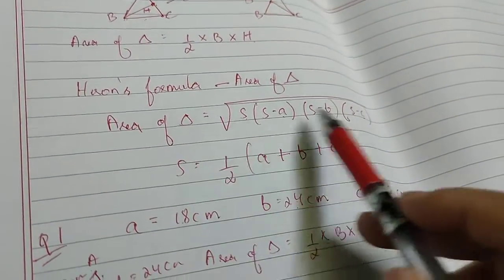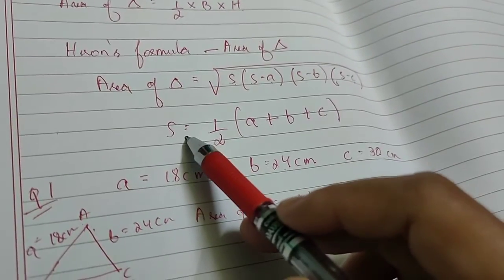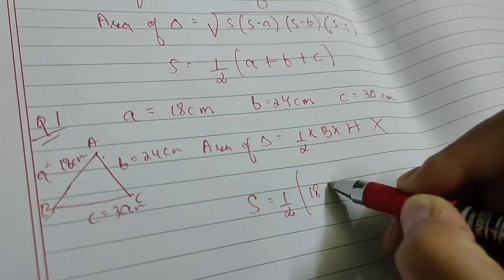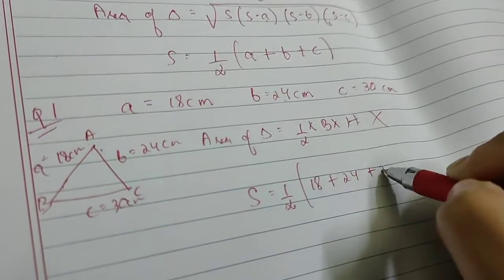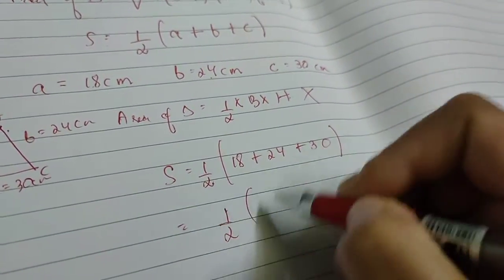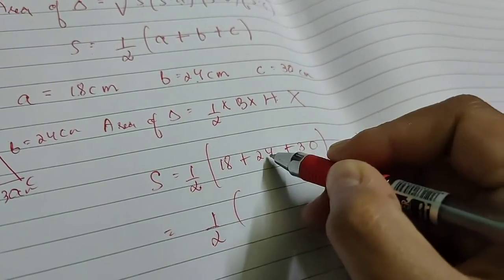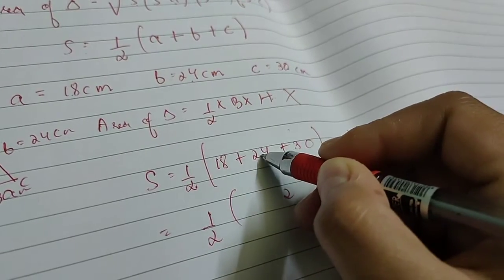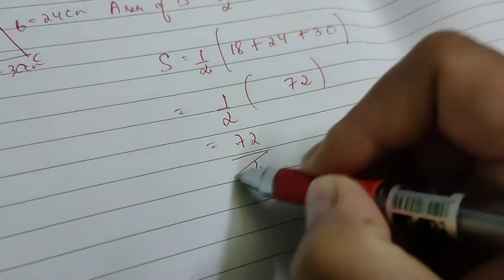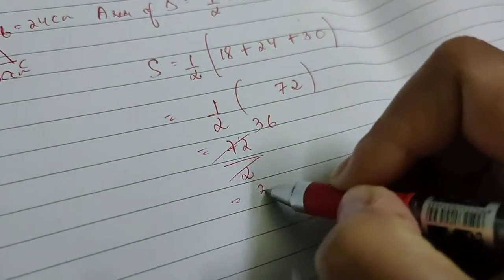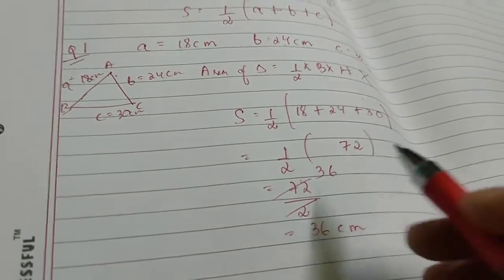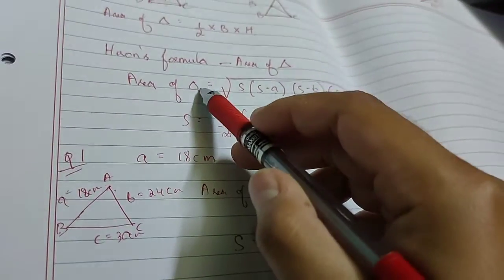First we calculate s: s = (a + b + c)/2 = (18 + 24 + 30)/2 = 72/2 = 36 cm. Now we have found s, so we will put it into the area of triangle formula using Heron's formula.